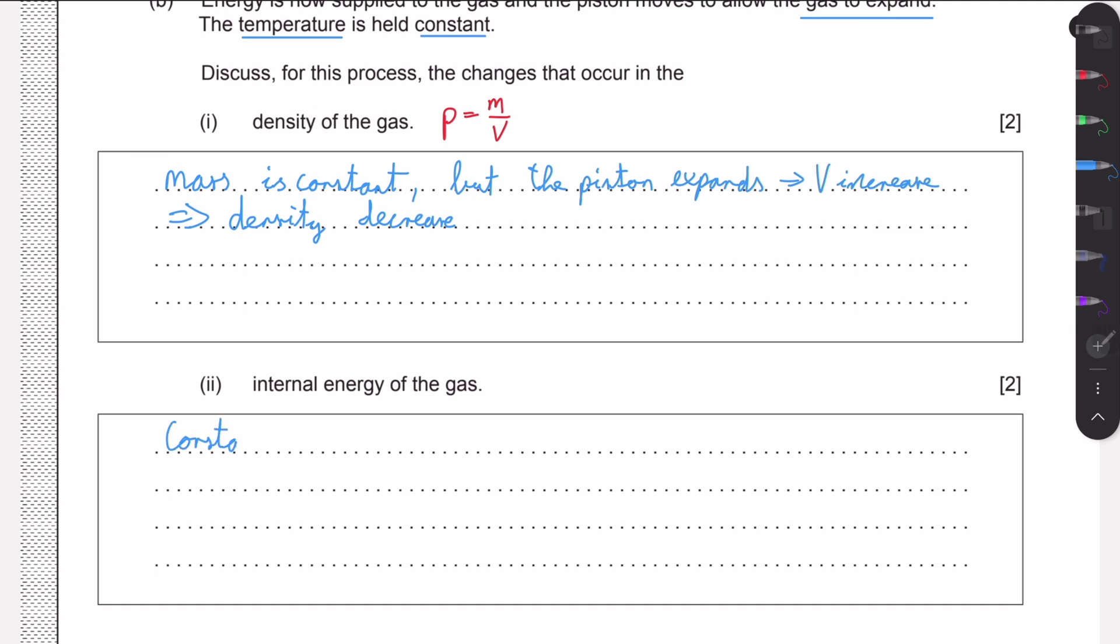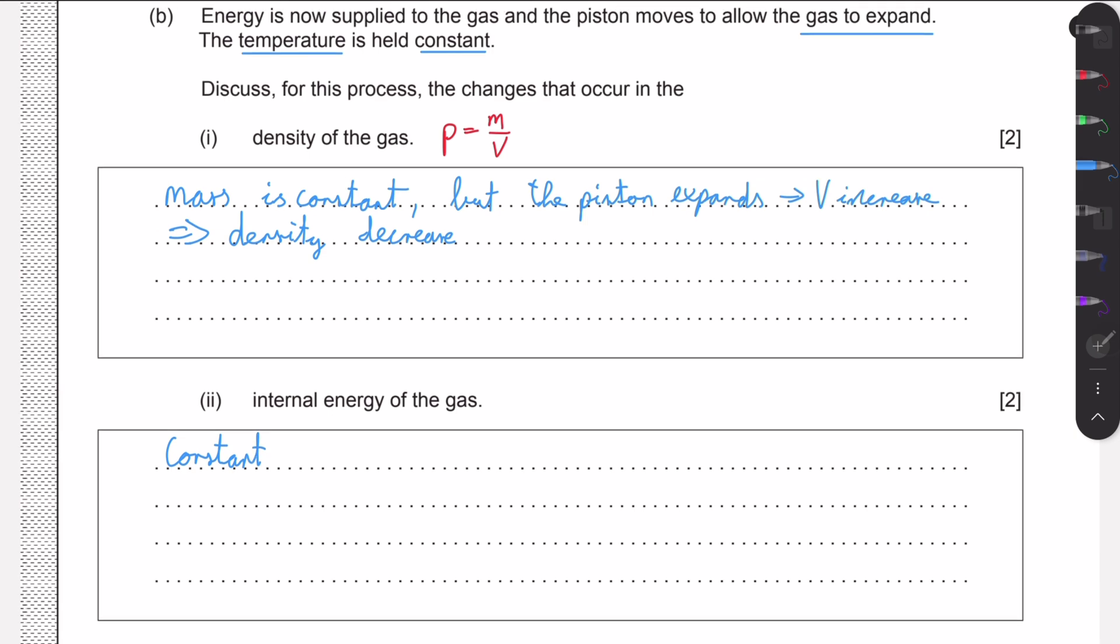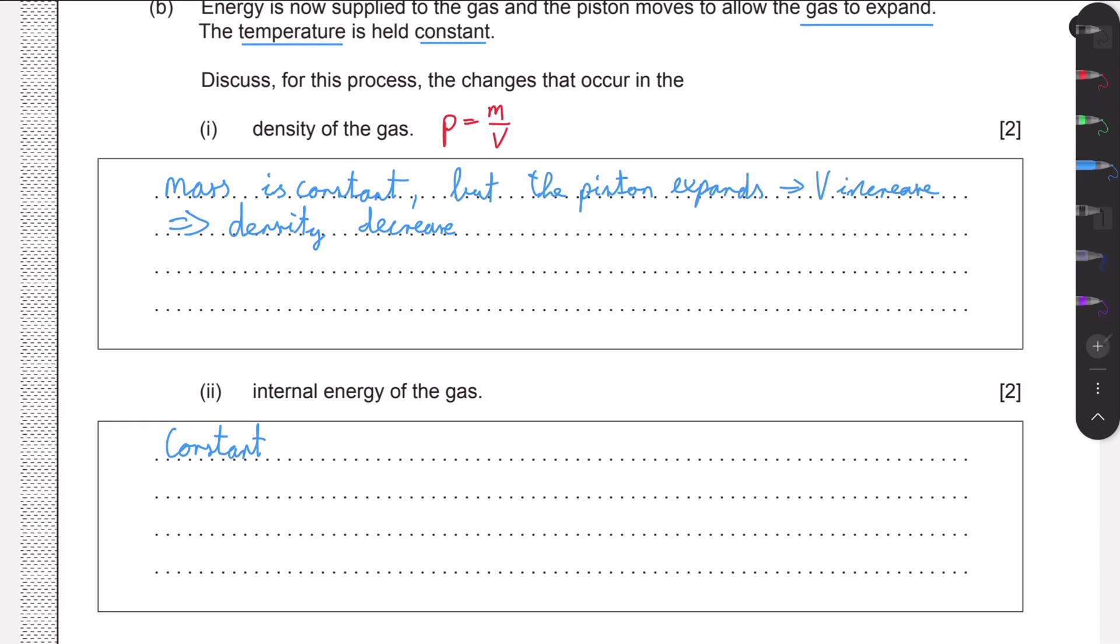This comes up quite often in paper one. We just have to remember: if the temperature is constant, the internal energy cannot change for an ideal gas. So as T is constant, the reason this is the case is because the internal energy...